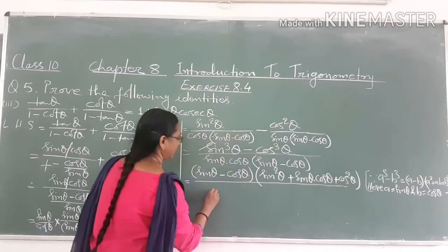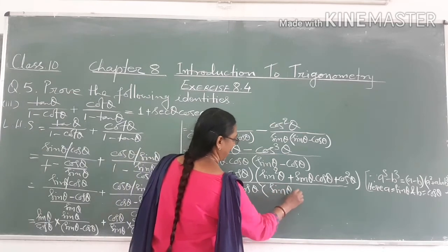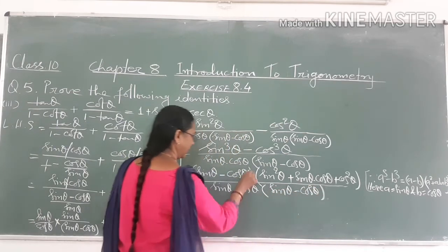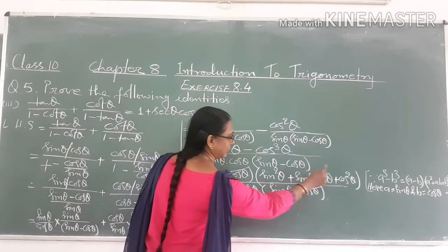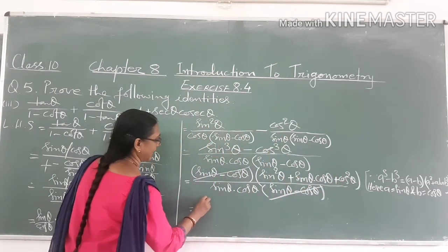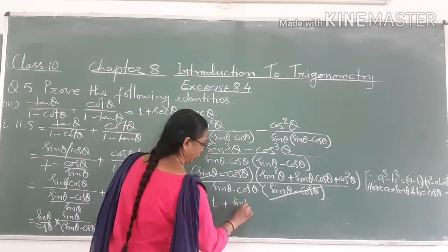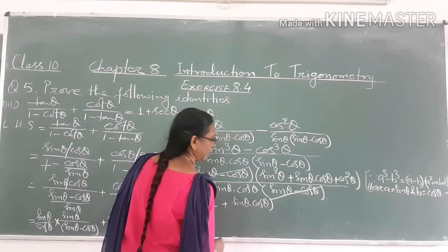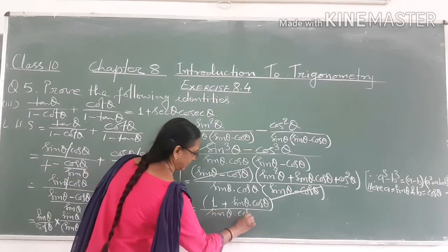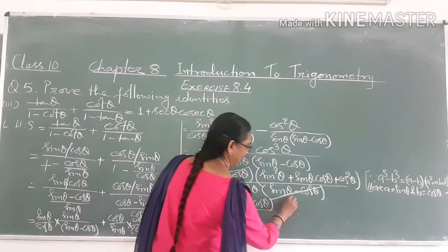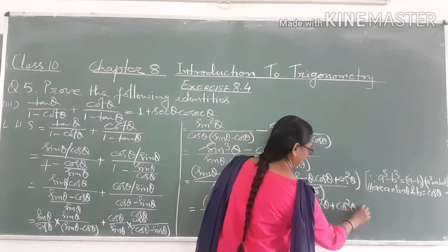Now sin θ into cos θ, with sin θ minus cos θ. So this becomes sin² θ plus ab plus cos² θ, that is sin² θ plus sin θ into cos θ plus cos² θ. Now we need to simplify the expression in the bracket, since sin² θ plus cos² θ equals 1.